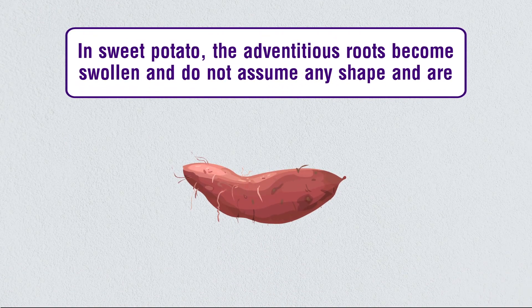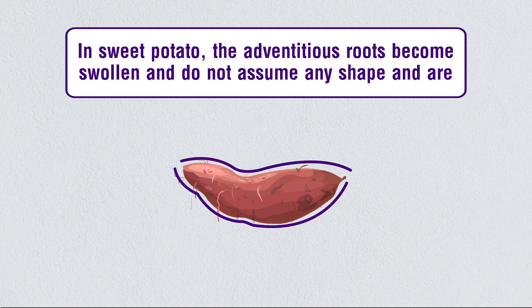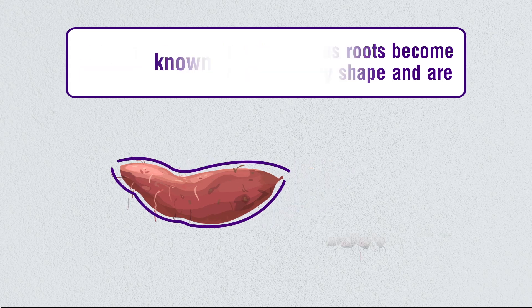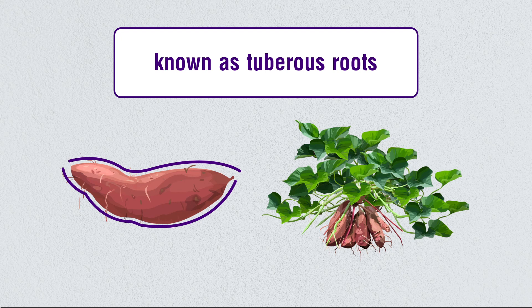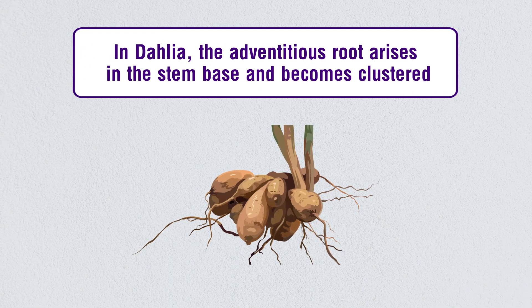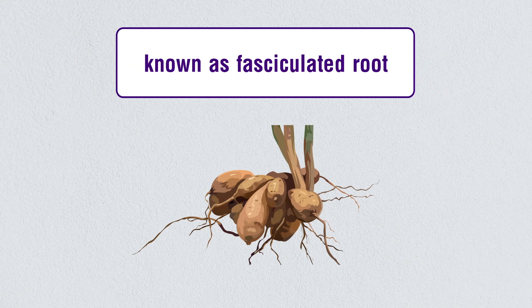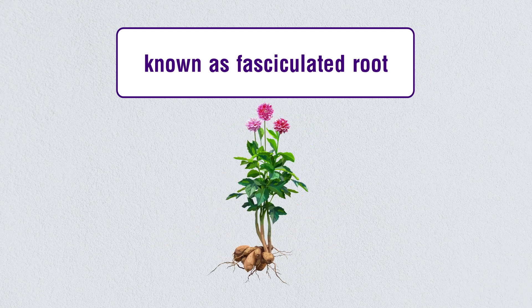In sweet potato, the adventitious roots become swollen and do not assume any particular shape — these are known as tuberous roots. In dahlia, the adventitious roots arise from the stem base and become clustered. This type of root is known as a fasciculated root.